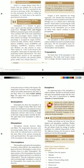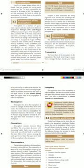The mesosphere extends between 50 kilometers and 80 kilometers. The temperature decreases with increasing height in this layer. Radio waves transmitted from the earth are reflected back to earth from this layer. Most of the meteoroids nearing the earth get burnt here. The uppermost limit of the mesosphere is called the mesopause.